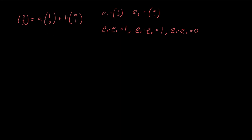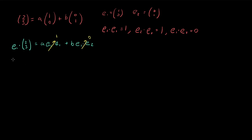So how does that help us? Well, if we want to find coefficient A, we can take the dot product of both sides with E1. So we have E1 dotted into (2, 3) equals A times (E1 · E1) plus B times (E1 · E2). We know E1 · E1 = 1 and E1 · E2 = 0, so we're left with E1 · (2, 3) = A, which gives us A = 2. We can do the exact same thing with E2 to find B = 3.